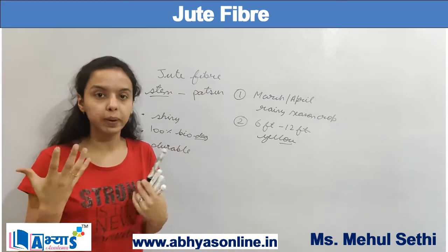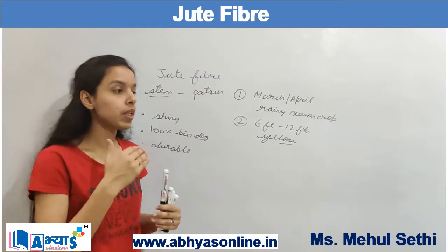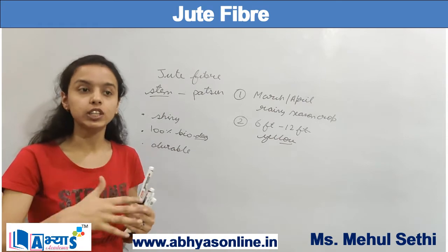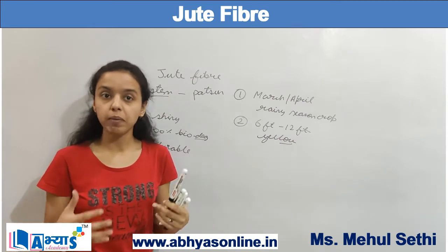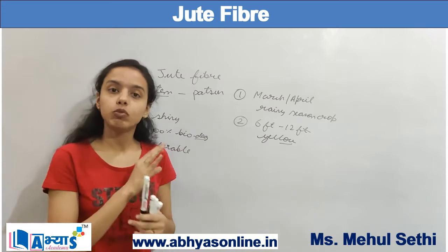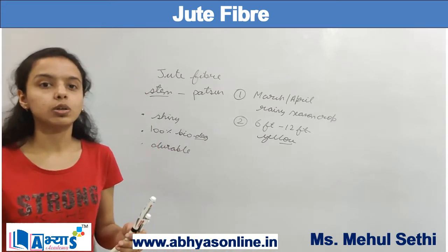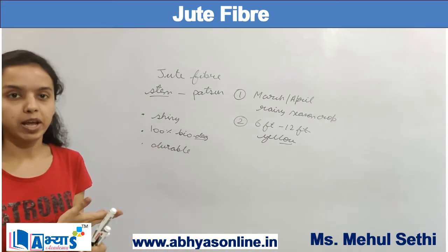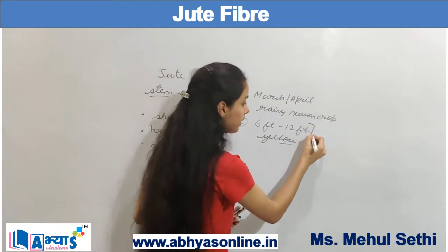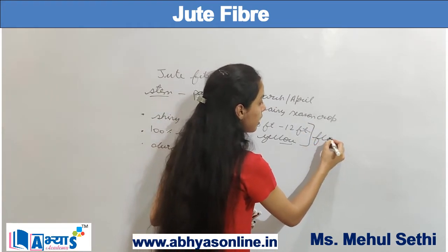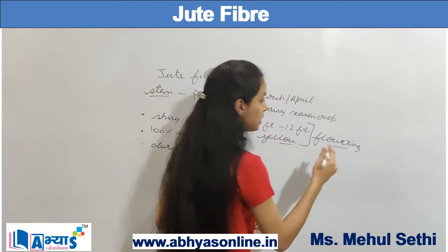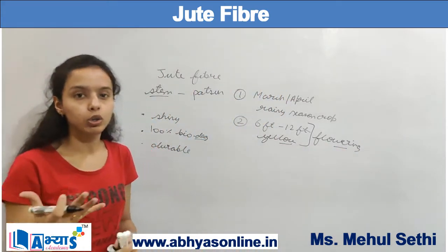The plant is not cut when it is too young, because at that point the jute fiber has not developed. It is also not cut in the fully mature stage, because at maturity the fiber has become very strong and it is very difficult to remove the jute fiber from the plant. So we harvest the plant during the flowering stage.